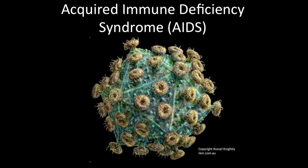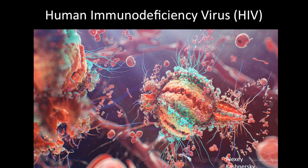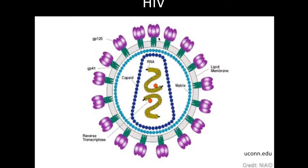Here we have a detailed picture of the human immunodeficiency virus, or HIV. You can see it's surrounded by an envelope, and it has spikes or receptors called glycoprotein receptors. This is what the virus is going to use to attach to its host. You can also see that it's surrounded by a lipid membrane, or an envelope.